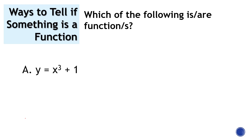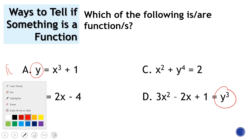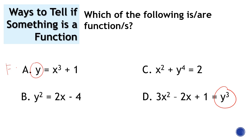What if we're talking about equations? If we are looking at equations, all we need to do is look at the variable y. If the exponent of y is odd, that means it's a function. Letter A is a function because the exponent of y is odd, and letter D also has an odd exponent of y. Letter C has y raised to 4, which is even, so it's not a function. Letter B is also not a function.